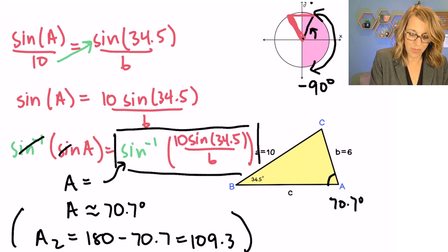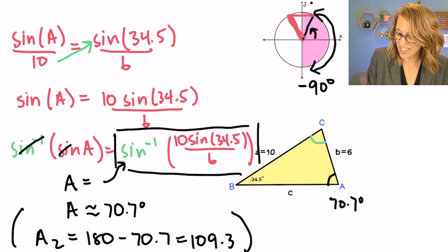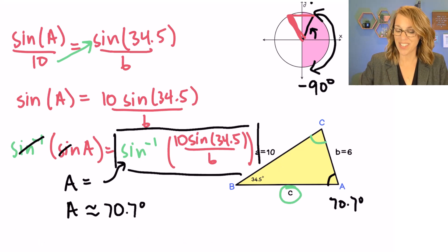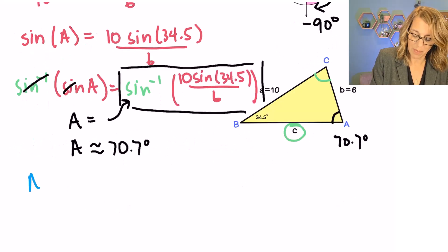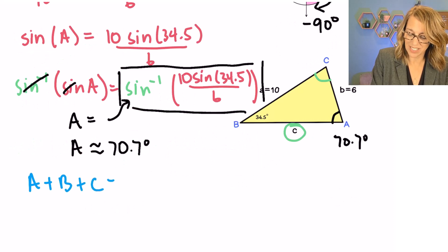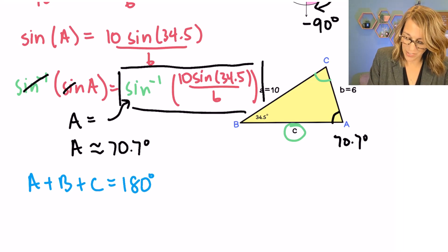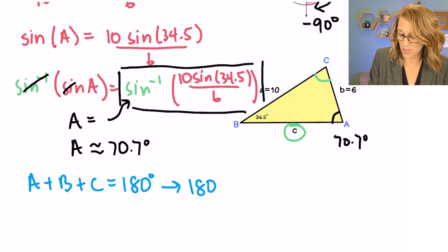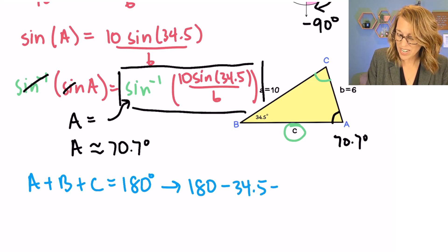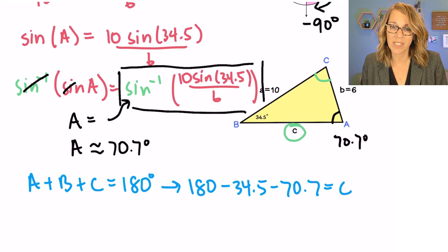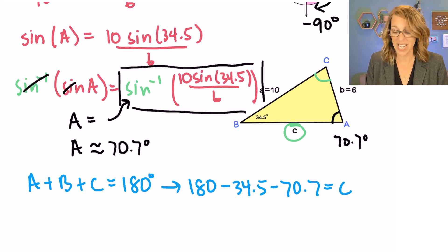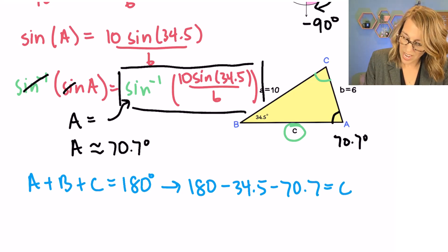Back in our triangle we still need to find angle C and side C. Let's do angle C first. The sum of all angles — A plus B plus C — equals 180 degrees. So to get angle C: 180 minus 34.5 minus 70.7 gives me angle C, which leaves me with 74.8 degrees.